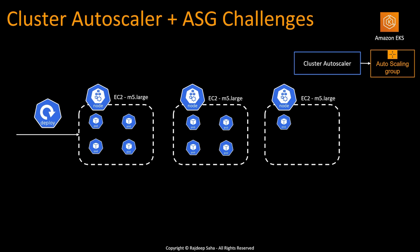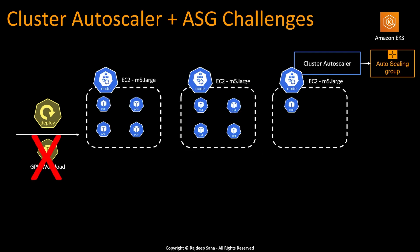Now let's take a look at another real-world cluster autoscaler with autoscaling group challenge. Let's say you have your Kubernetes cluster running, everything is good, and then a new deployment file comes in which requests a pod that requires a GPU EC2. In the deployment file you can specify whether the pod requires GPU resources or not. At this point, none of those EC2s can support GPU workloads, so this GPU workload pod cannot be scheduled.